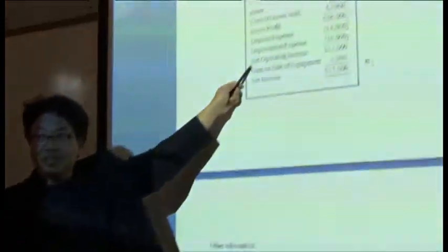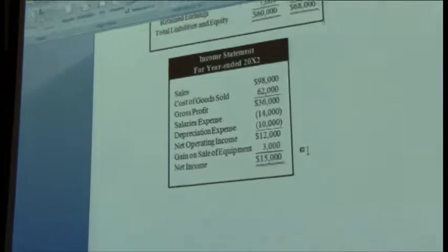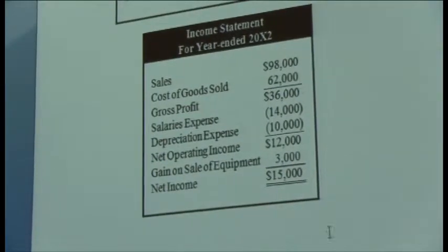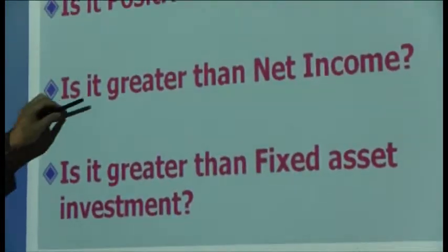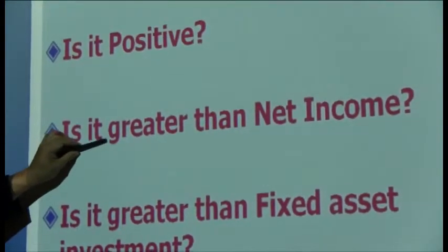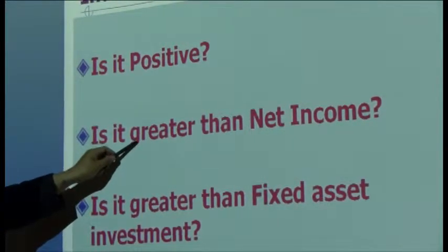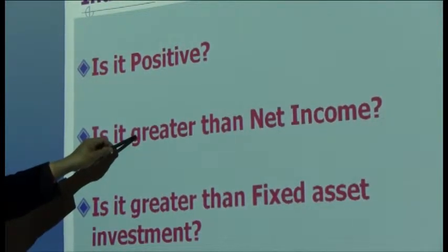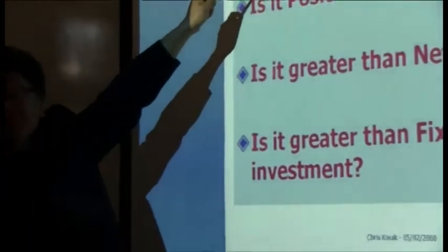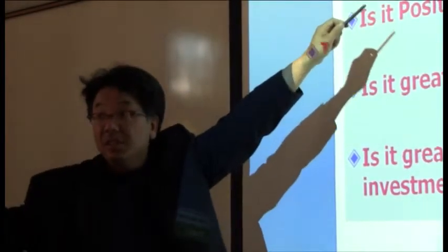So what's the topic? Cash flow. We are talking about this now. So how come it's different? That's the question. In this case it's greater than net income, but it could be smaller than net income. Please use your imagination — what could be the reasons that the operating cash flow figure might be different from net income? More than one answer.